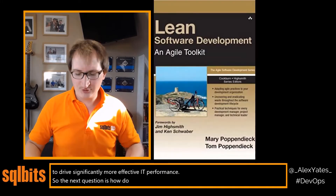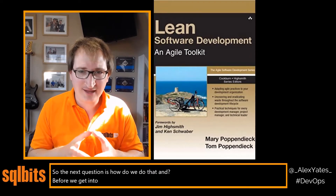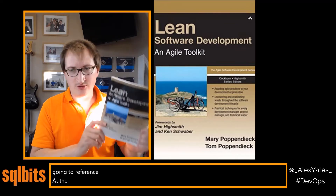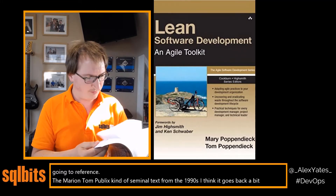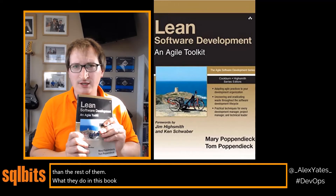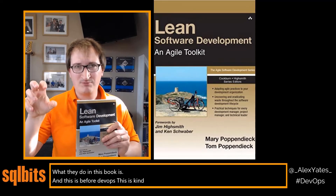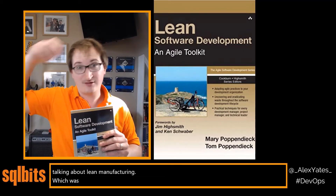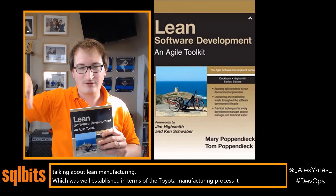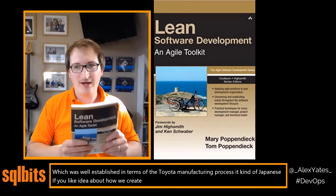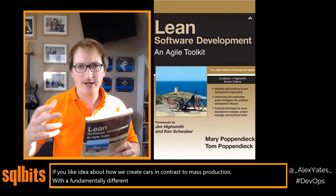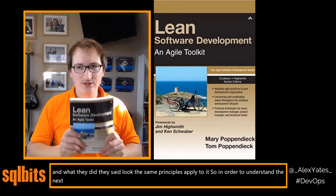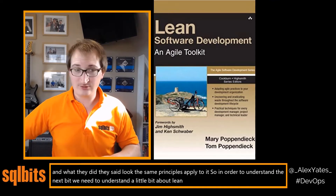So the next question is: how do we do that? Before we get into that, I'm going to talk about lean software development and reference the Poppendiecks' seminal text. What they do in this book — before DevOps, possibly even before Agile — is talk about lean manufacturing, which was well established in the Toyota manufacturing process. It's the Japanese idea about how we create cars in contrast to mass production. And they said the same principles apply to IT. So in order to understand the next bit, we need to understand a little about lean.